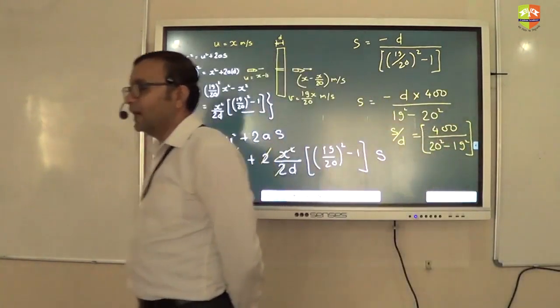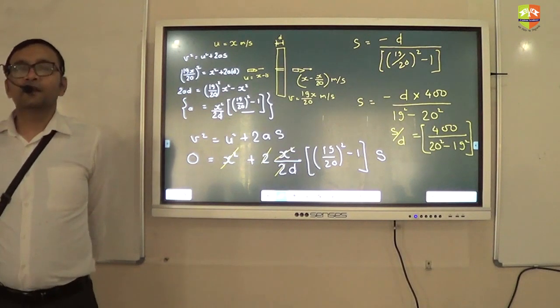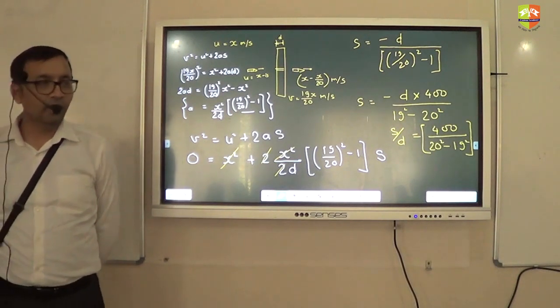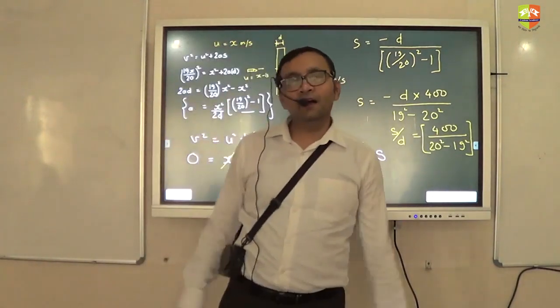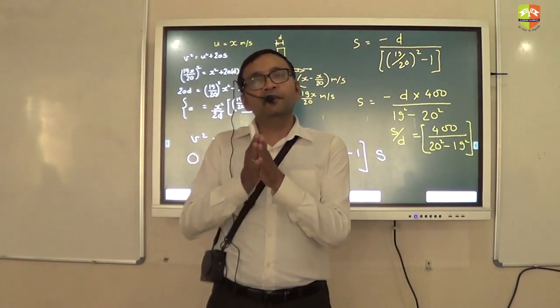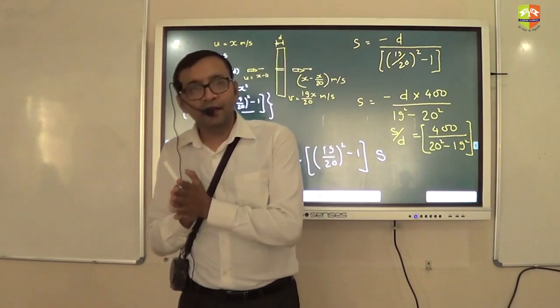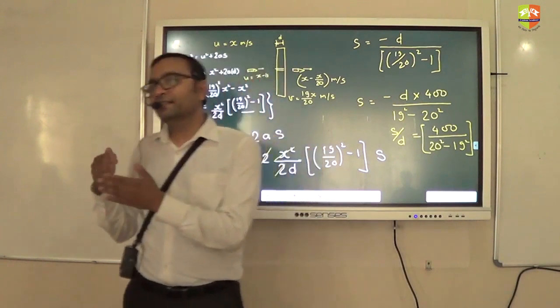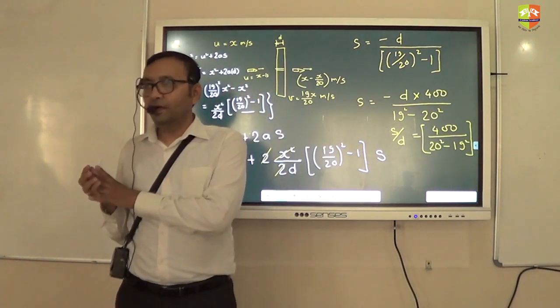So let us start the last topic of this chapter which is circular motion. Okay? We will be done with this topic in half an hour and then afterwards we will take a test one day and then we will have a test. Okay? The test will be for one hour and after the test we will discuss the test also. That will again take half an hour. Understood?